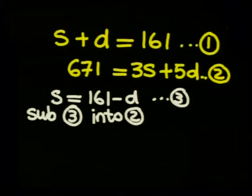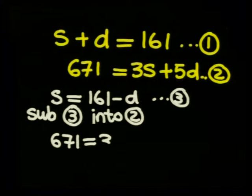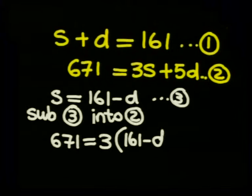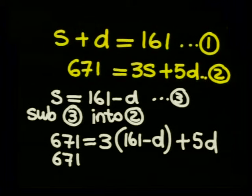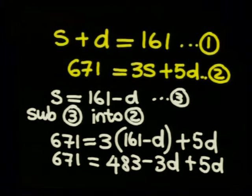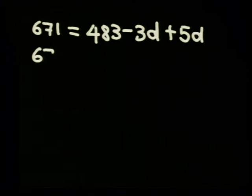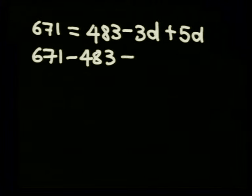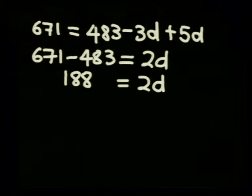We get 671 is equal to 3 multiplied by 161 minus D plus 5D. When we multiply out we get 671 is equal to 483 minus 3D plus 5D. Great. We have an equation in one unknown. That's easy to solve. We get 671 minus 483 which is equal to 2D. 671 minus 483 is 188 which is equal to 2D. Now if we divide both sides by 2 we get 94 is equal to D.